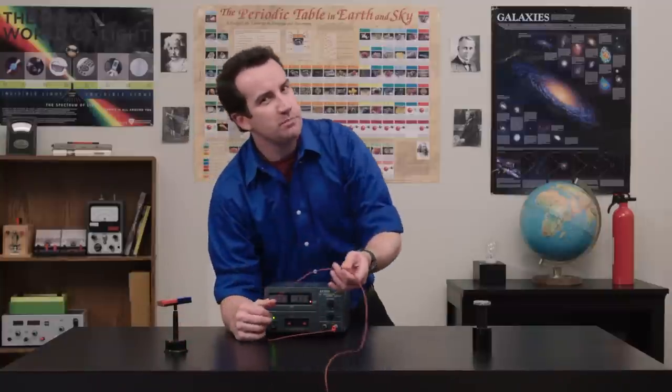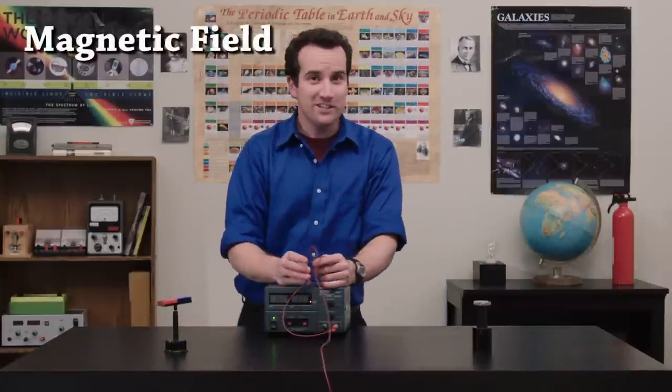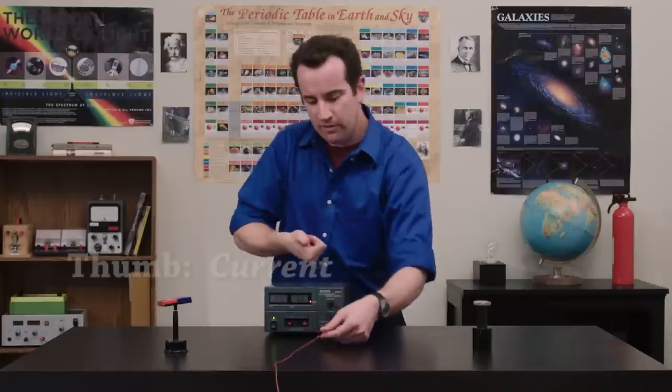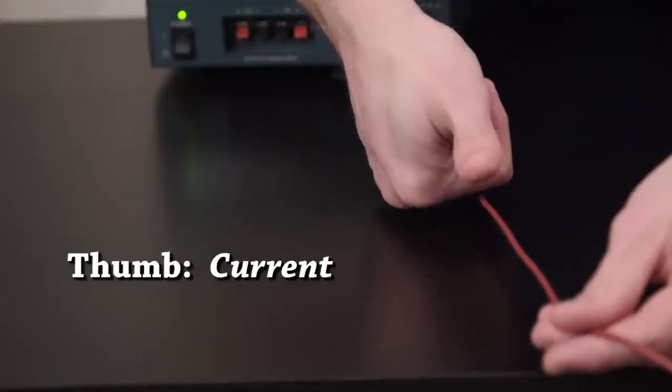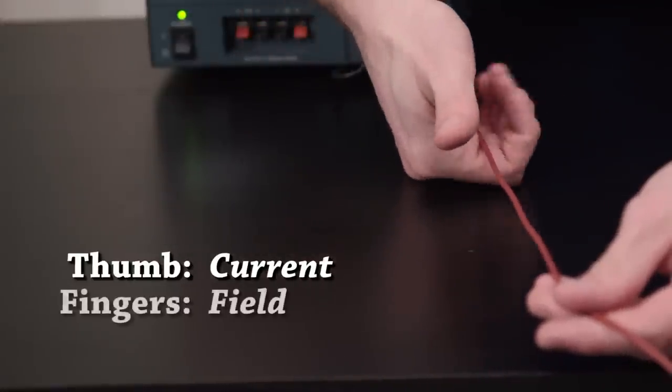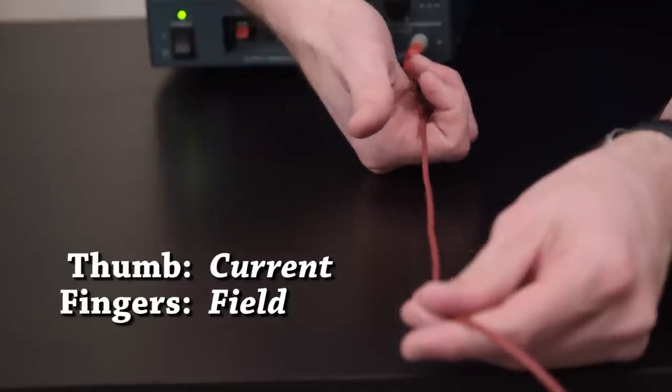The direction that the compass points is called the magnetic field, and you can predict it with your right hand. Let your thumb be the current, the flow of imaginary positive charge, then curl your fingers around the wire. Underneath they point one way and above they point another.